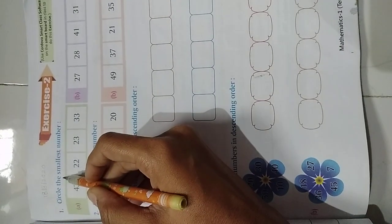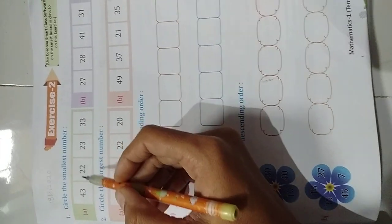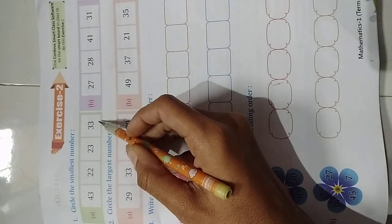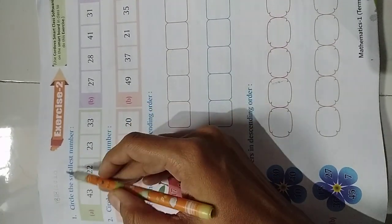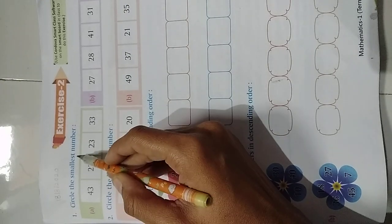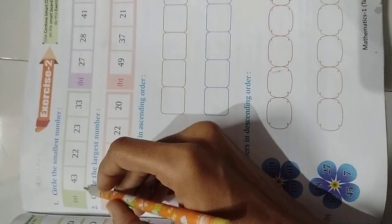Question 1. Circle the smallest number. Now there are some numbers given here and we need to find smallest number here. So I will explain first one for you.